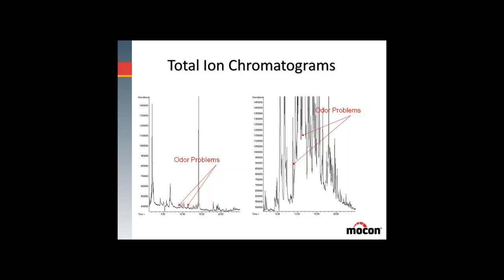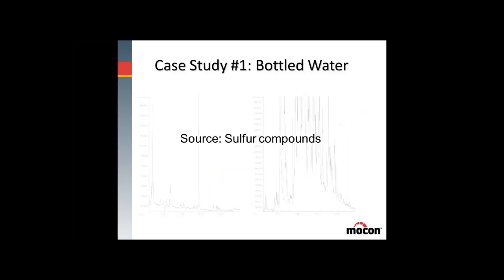What we found is that the odor-causing compounds were sulfur compounds. Knowing this information, you can go back into the process or supply line and try to determine where they could have come from. Additional analyses could have been performed on the plastic bottles themselves, the slip agent, the ink. It also could have been that the water was contaminated with sulfur compounds to start with. These are additional samples we could evaluate, knowing which chemical compounds to look for.